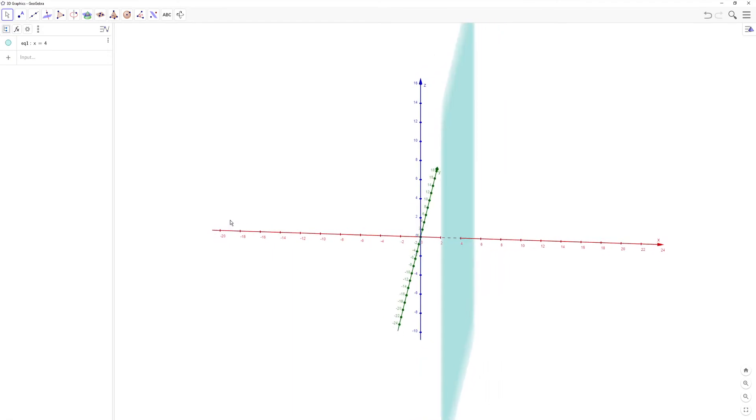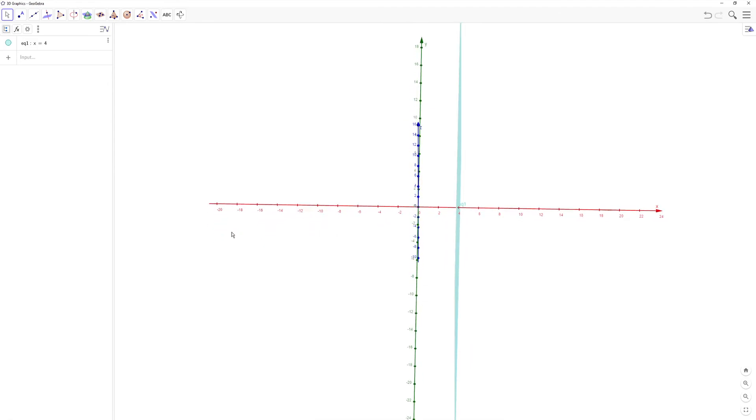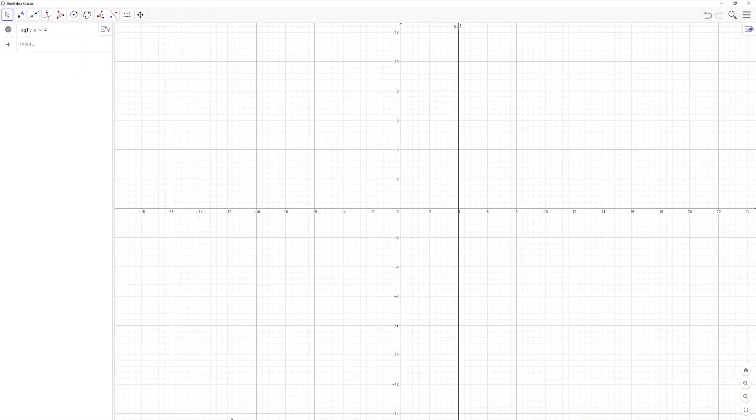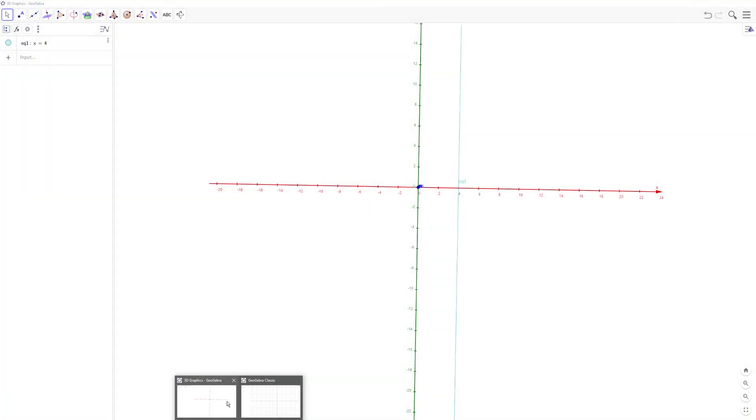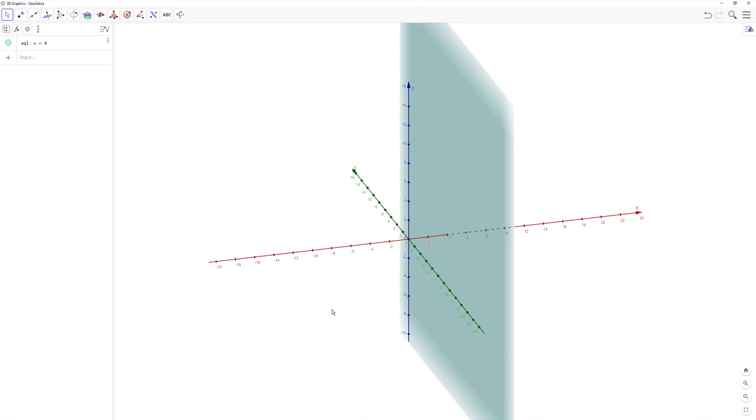But if we're going to look at the projection of this plane on the xy-axis, you can see it creates that line that we just had in the 2D. But since there's three dimensions, this line can go up forever and down forever, creating a plane.